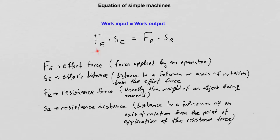Both the left and right side of the equation must be equal, but the individual terms on each side can vary. We can have a very small effort force applied at a large effort distance from a fulcrum, and as a result on the other side, a very large resistance force applied at a very short distance from the fulcrum. This means the simple machine has multiplied the effort force to lift a much larger resistance. A small effort force is applied a large distance from a fulcrum, and on the other end, a very large resistance can be moved a very short distance from the axis of rotation.